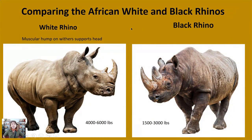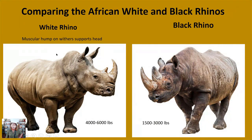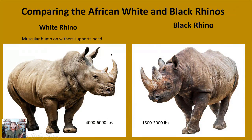Since we're on safari, we want to compare the two species we might see — the white rhinoceros and the black rhinoceros. Notice that muscular hump on the withers that supports this giant head and has a lot of muscles to help them lift it. They are the largest surviving species of the five — up to 6,000 pounds. You can notice both species have two horns, but often the white rhino's front horn gets a lot longer relative to the back horn as it ages, whereas in the black rhino the two horns are more equal in length.